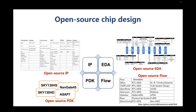We can find open source versions of all four parts that we can use from the community. For open source IP, there are many RISC-V-based processor cores from the community, like Xiangshan from the keynote today, and many other open source cores, as well as some analog IPs, accelerators like FFT, GPU, and others.